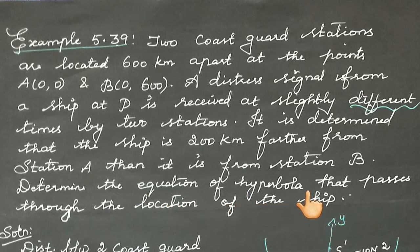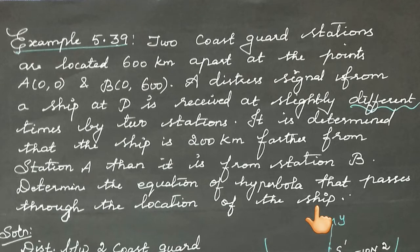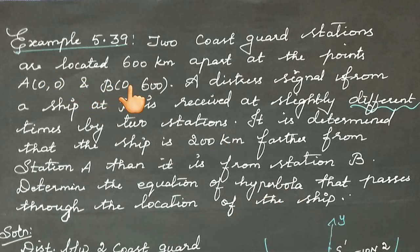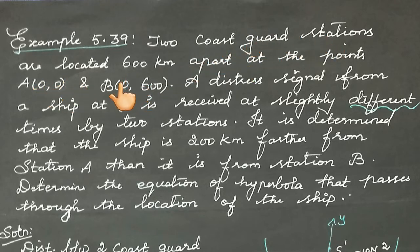We need to find the equation of the hyperbola that passes through the location of the ship. Let us assume the ship's location as point P. The two Coast Guard stations are the two fixed points, which are the foci of the hyperbola. Now let us plot the points A(0,0) and B(0,600).